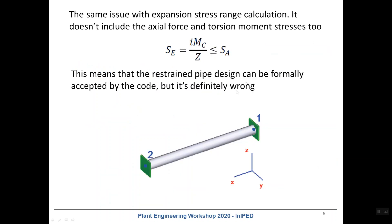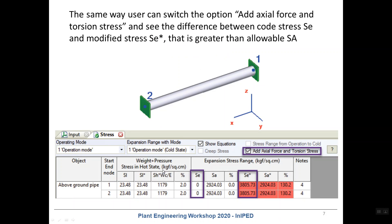Another issue has the same root cause but is related to the expansion range stress. In ASME B31.1 code it takes into account only bending moment — it does not take into account the axial force or torsion moments. So if you create a design like a pipe restrained between two anchors, the code stress will be zero because the bending moment is zero in this model. But the real stress range will be huge and greater than allowable, because of very high axial force.